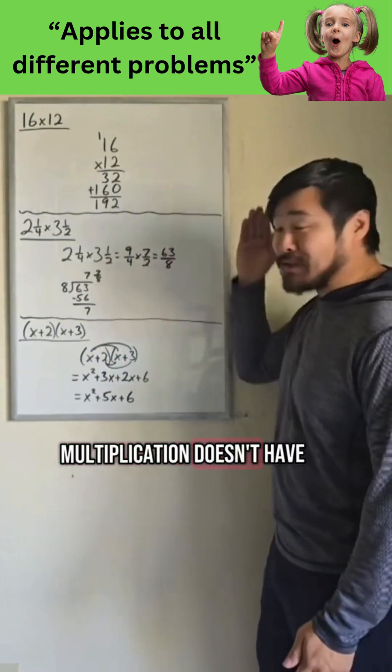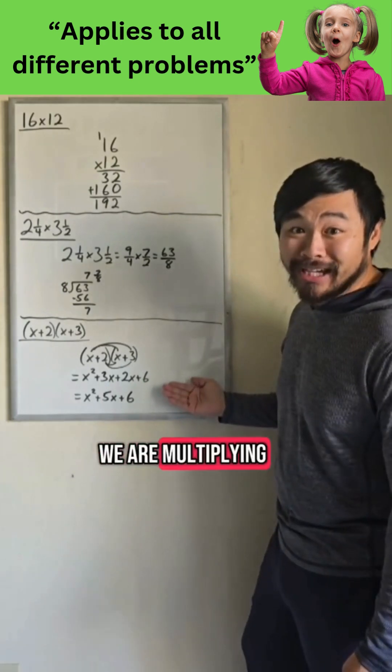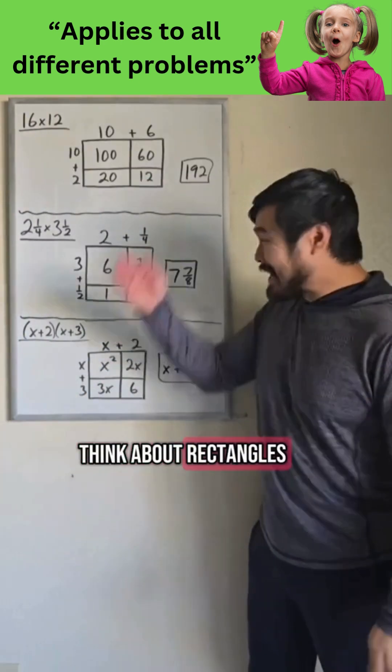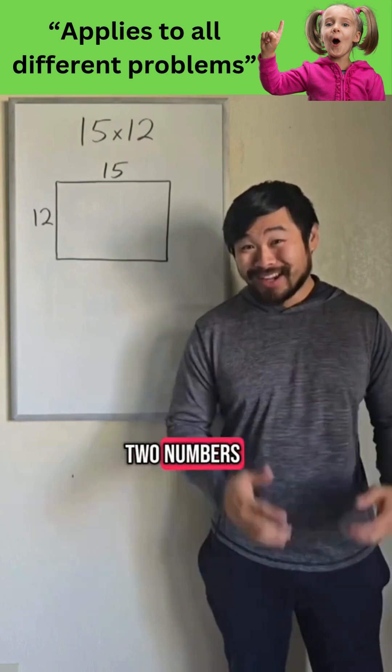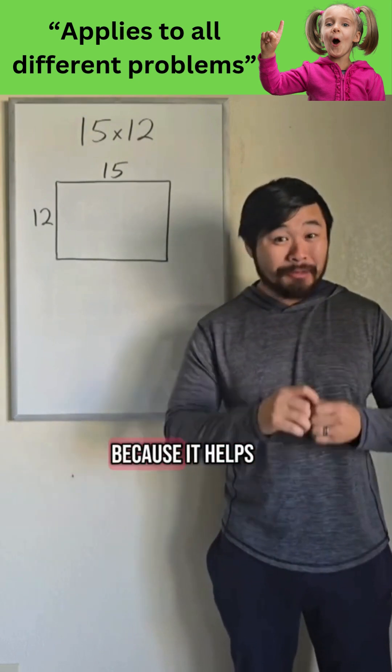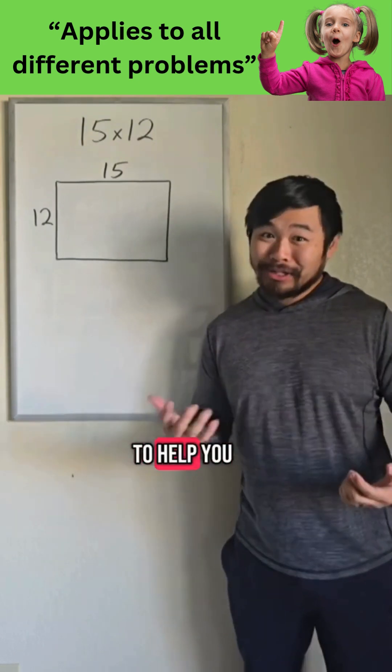So multiplication doesn't have to look different based on what we are multiplying, because we can think about rectangles every time. So the next time you're multiplying two numbers, think about a rectangle, because it helps you think about what you know to help you in new situations.